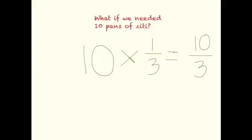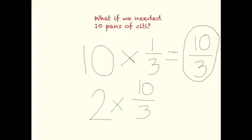But each recipe calls for 2/3, so I need to, in a sense, double 10/3. Now we could do 10 plus 10, or we can multiply it again by 2. 2 times 10/3 equals 20/3. So we need twenty one third cups of cheese for our baked ziti recipe.